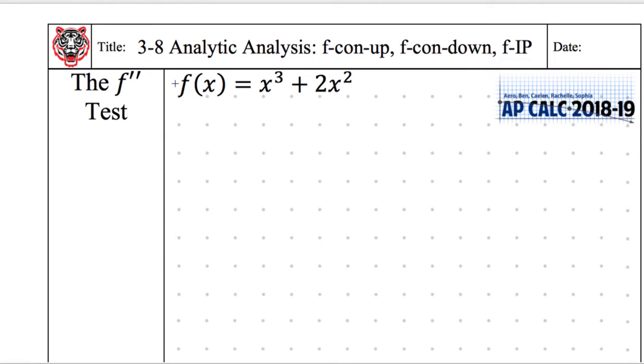So analytic analysis. This is now the f double prime test, the second derivative test. We're just adding on to everything that we've been doing. We have to do our same number lines just as before, and now we're just going to make it that much more complex. So what is step one? Draw the x-axis. There's my x-axis.